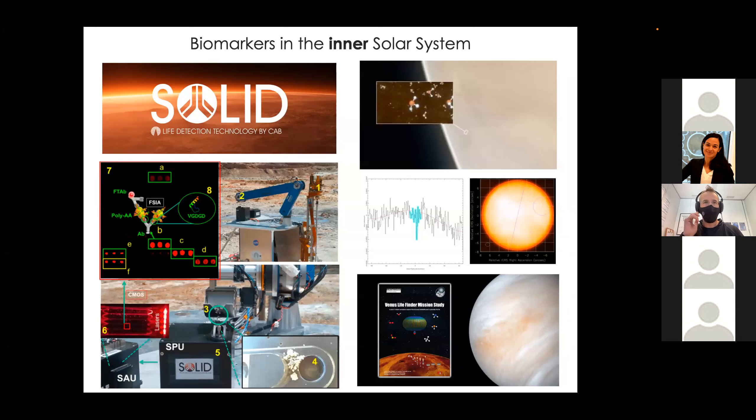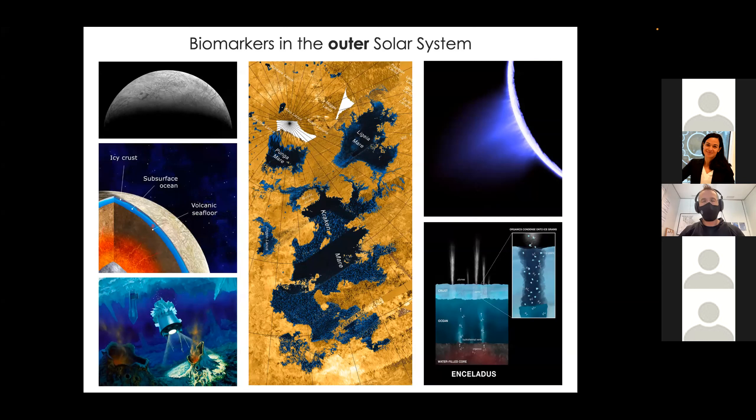More biomarkers in the inner solar system. To the left, we have something made at CAB. It's an antibody microarray called Solid Science of Life detector and has been used in Antarctica and many other places on Earth, and could be used, for example, on Mars. To the right, we have the famous phosphine and the Venus life finder mission study. I must say that if you read the paper in which there was the claim of the detection of phosphine on Venus, the paper is correctly written. The big problem two years ago was the content of the press release. That's a note for how to make public the discovery of biomarkers.